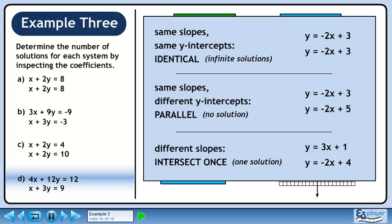To summarize, when you have the same slopes and the same y-intercepts, the lines lie right on top of each other and have infinite solutions. When the slopes are the same but the y-intercepts are different, the lines are parallel and have no solution. When the slopes are different, the lines will have one intersection point.